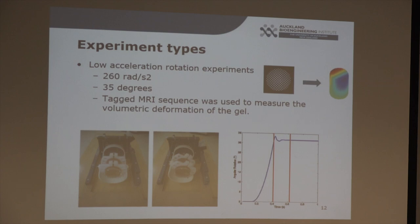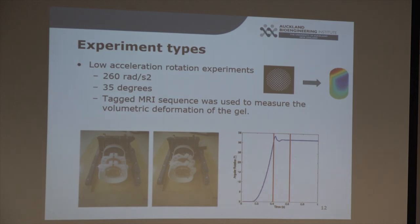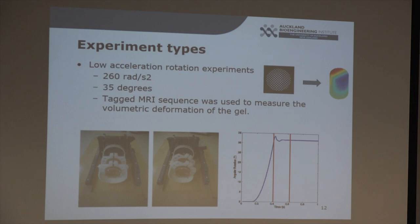The first experiment type was a low acceleration experiment — about 260 radians per second squared and 35 degrees rotation. The main benefit of these low acceleration experiments was getting volumetric data of the gel's displacement, which is quite valuable when validating the models. The phantom was constructed here but sent to America, where the group there conducted the experiments. The high acceleration rotation experiments were conducted on the slip phantom here, reaching up to 900 radians per second and about 180 degrees rotation — much closer to the accelerations seen in abusive head trauma.